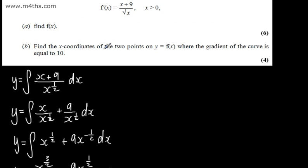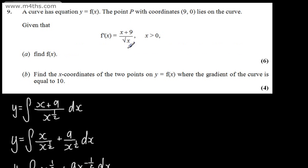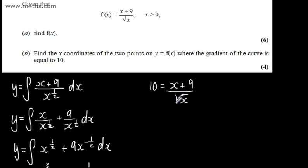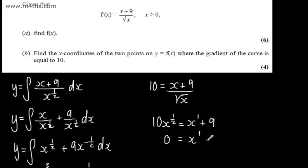In part B, we need to find the x-coordinates of the 2 points on y equals f of x where the gradient of the curve is equal to 10. Remember, f'(x) is the gradient function. So we can say 10 equals x plus 9 over root x. We need to solve this equation. Multiplying both sides by root x, we get 10x to the 1 half equals x to the power of 1 plus 9. Rearranging and setting the left-hand side to 0: x minus 10x to the power of 1 half plus 9 equals 0.